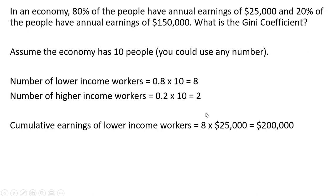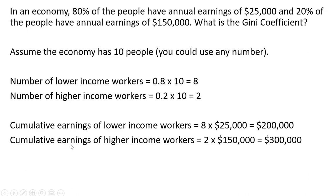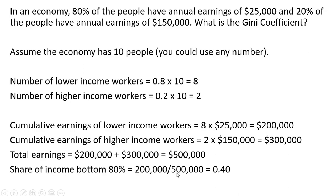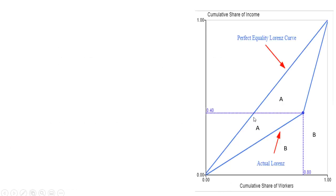Let's solve for the cumulative earnings of the lower income workers. We have 8 workers each earning $25,000, so the bottom 80% collectively earn $200,000. The higher income earners earn $150,000 each, and there are 2 of them, so collectively they earn $300,000. Total earnings in this economy is $500,000. The share of income to the bottom 80% is 40% ($200,000 divided by $500,000), and the share to the top 20% is 60% ($300,000 divided by $500,000).